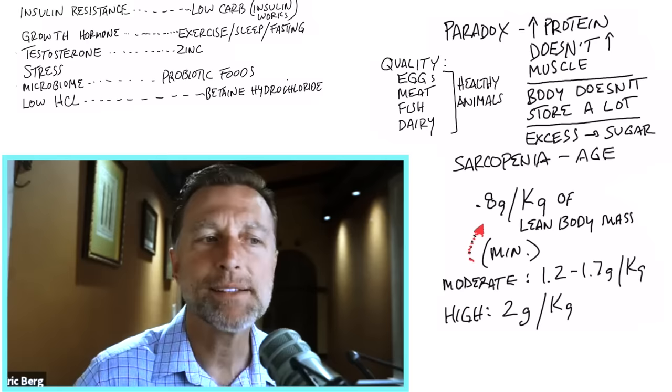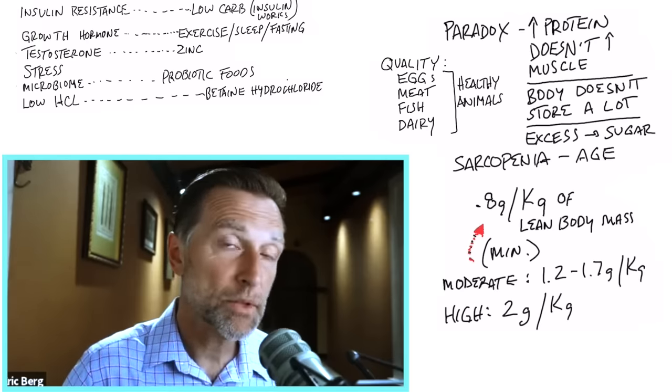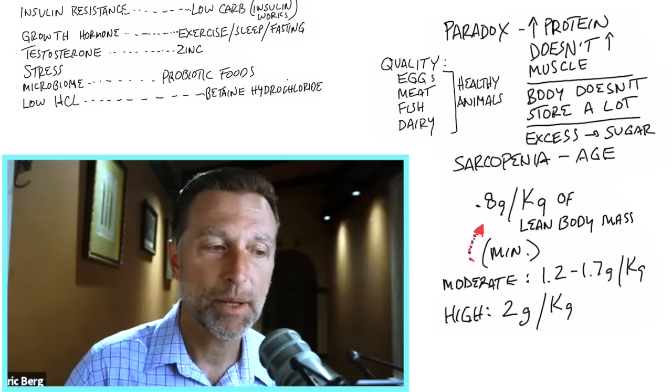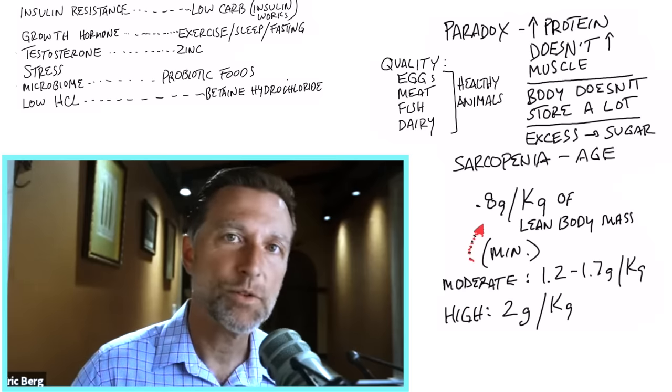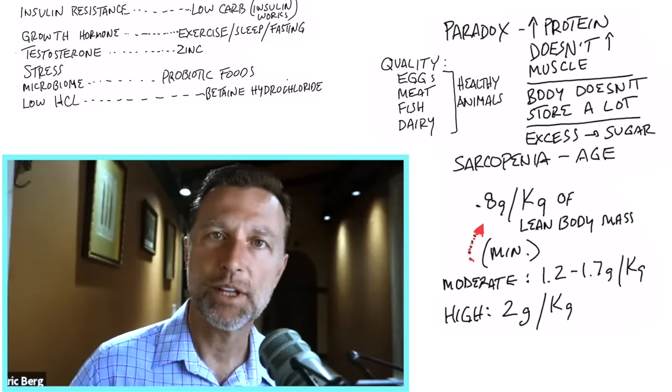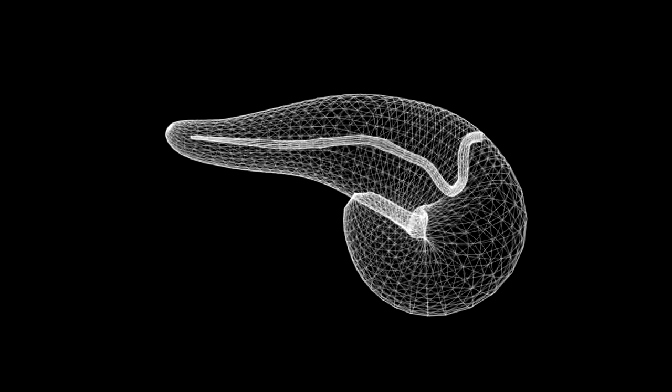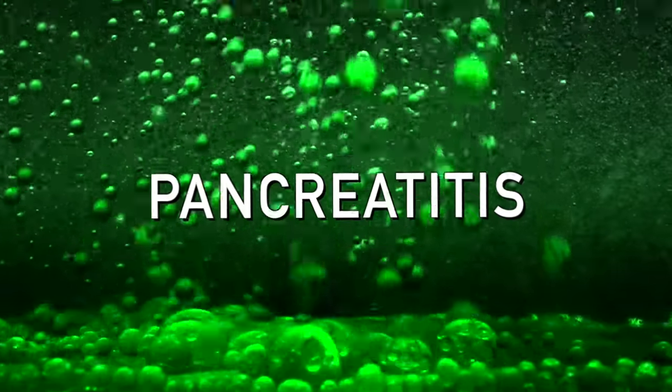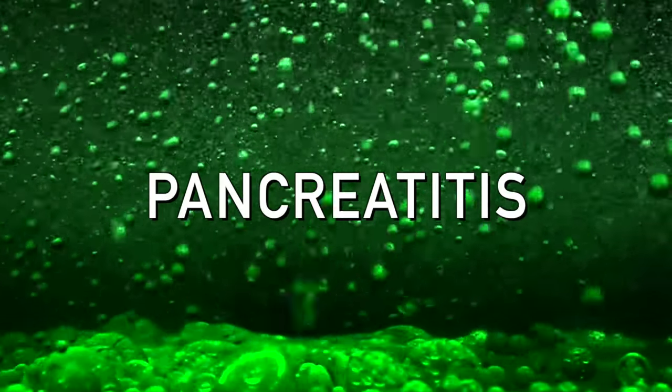Now, also enzymes, enzymes mainly from the pancreas and even from the small intestine can be a factor. If you don't have enough enzymes, you're not going to be able to break down certain foods that then can turn into these pure amino acids. So a couple of things with the pancreas, you could have a bile sludge that can build up, that can create pancreatitis.